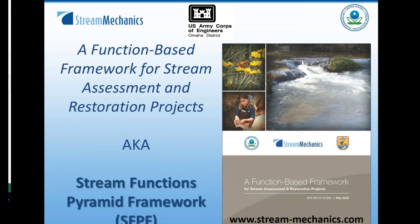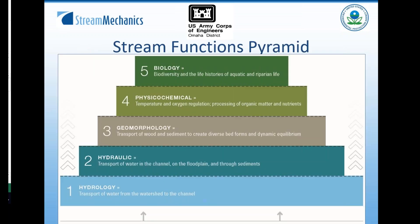I'm going to do a little bit of background and then we'll stop with PowerPoint and I'll open up the spreadsheet and enter some data together so you get a feel for how it works. The quantification tool is based on the stream functions pyramid framework. I'm not going to go into detail on that, but there is a document on the Stream Mechanics webpage, as well as EPA's webpage and the Fish and Wildlife Service, that will give you that background. I just want to pull out some of the key terms that you will see in the quantification tool.